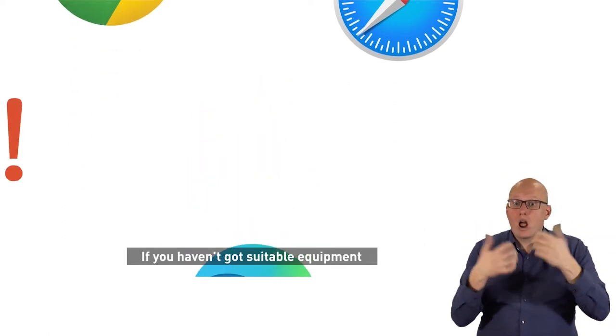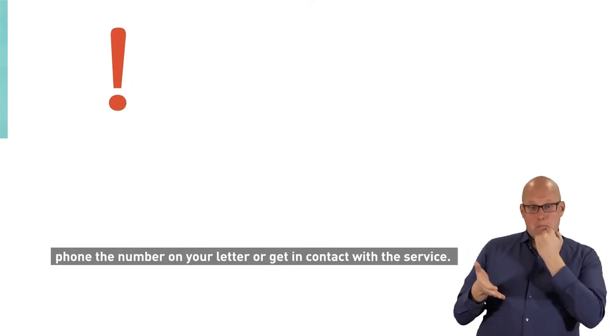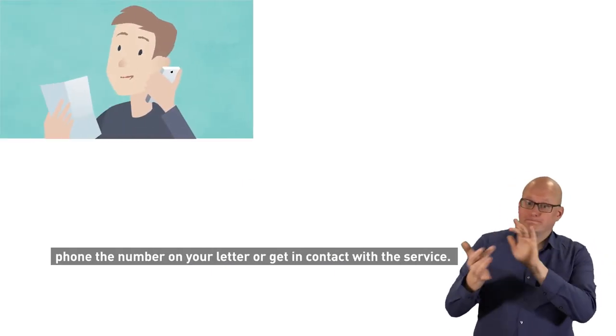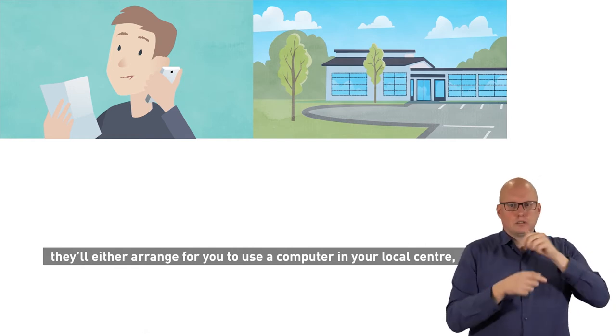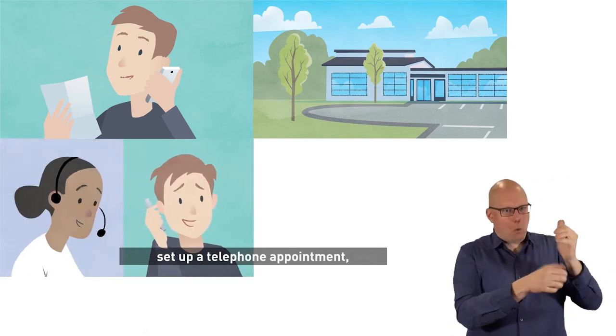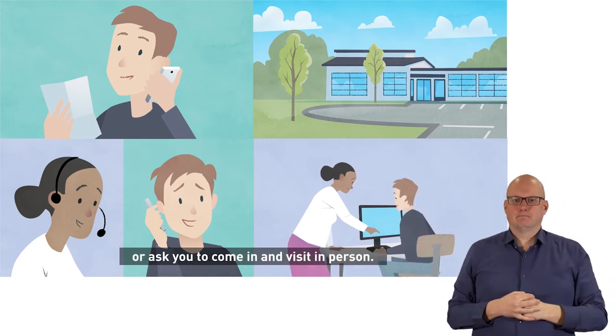If you haven't got suitable equipment or are having trouble getting it to work phone the number on your letter or get in contact with the service. If they're unable to offer you technical support they'll either arrange for you to use a computer in your local centre, set up a telephone appointment or ask you to come in and visit in person.